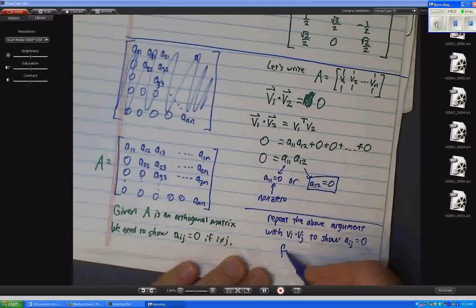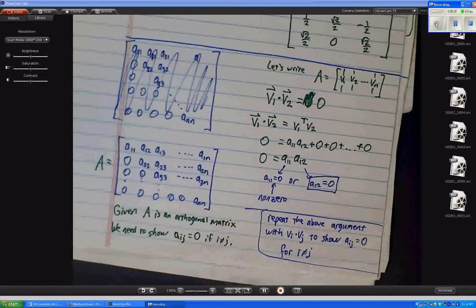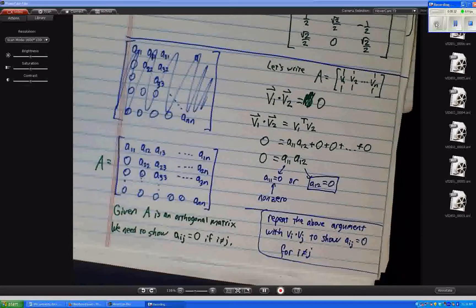And, again, for i not equal to j. And that's kind of it. You just keep doing that. And there's nothing special about the numbers 1 and 2. You put in any new numbers and that'll do it.